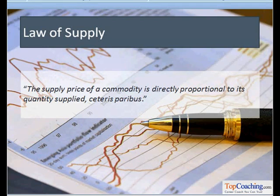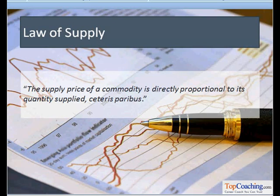In our previous session we discussed the law of demand. Similarly, there is a law of supply as well. The law of supply is a direct relationship between the supply price and the quantity supplied, considering all other factors constant. Firms will supply less at lower prices and more at higher prices. As the price of a commodity rises its supply expands, and as the price falls its supply contracts.